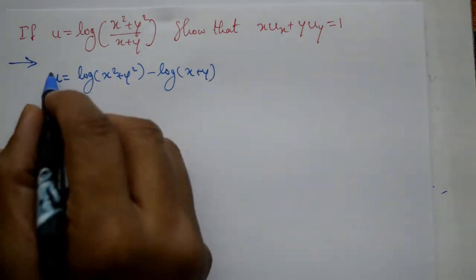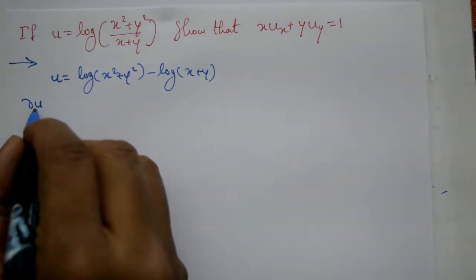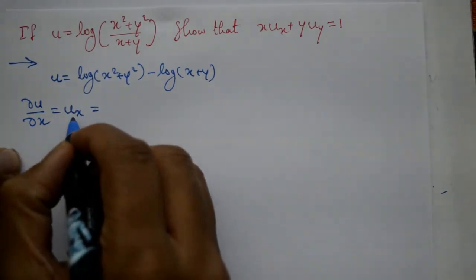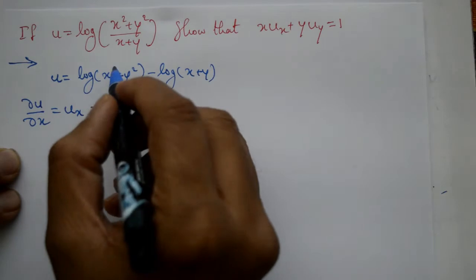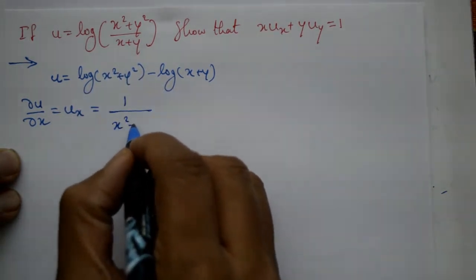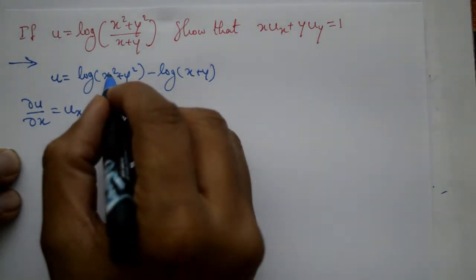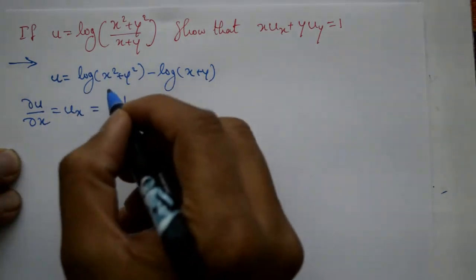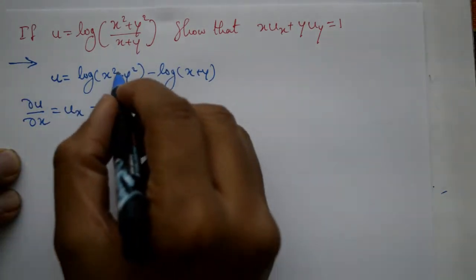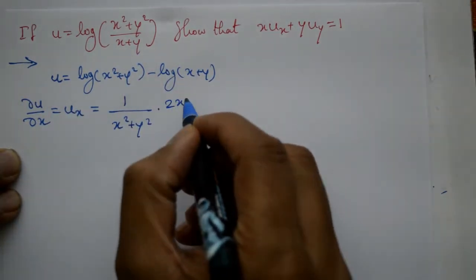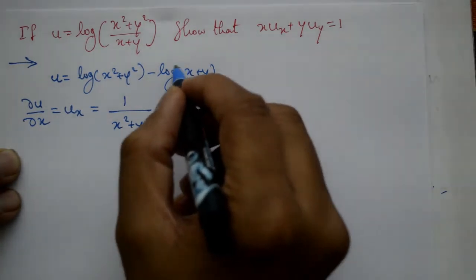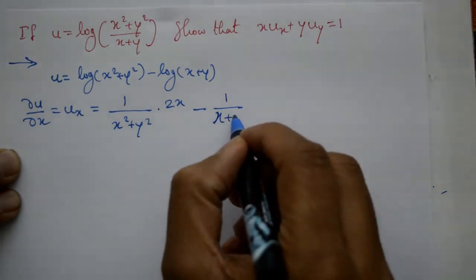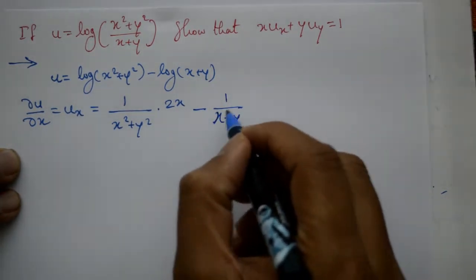Dou u by dou x hai, so differentiate u with respect to x karenge. Dou u by dou x: first term hai ga 1 by x square plus y square hai ga, baad me x square plus y square differentiate karenge — y treat it as a constant, x square differentiate hoga to 2x. Minus second term: 1 by x plus y hai ga, x become 1 hai ga.